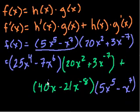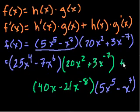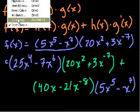Times 5x to the fifth minus x to the seventh. All we did here is we said f of x is made of these two expressions multiplied by each other. To take the derivative, I take the derivative of the first one and multiply it by the second one, and then add that to the derivative of the second one multiplied by the first one. Let's do some more examples.